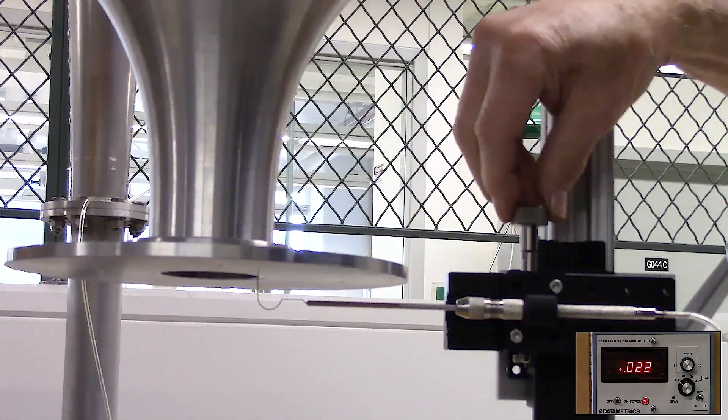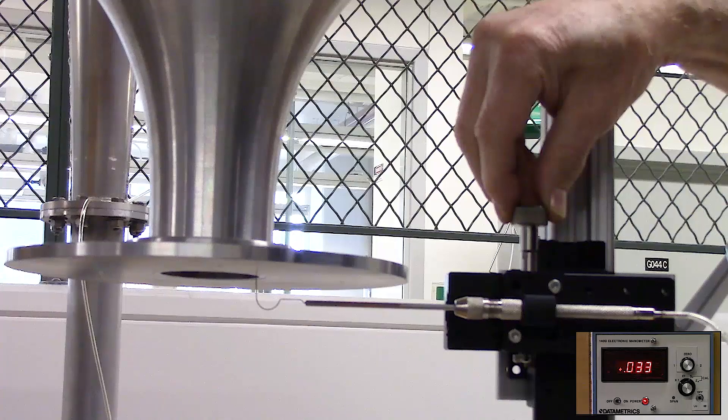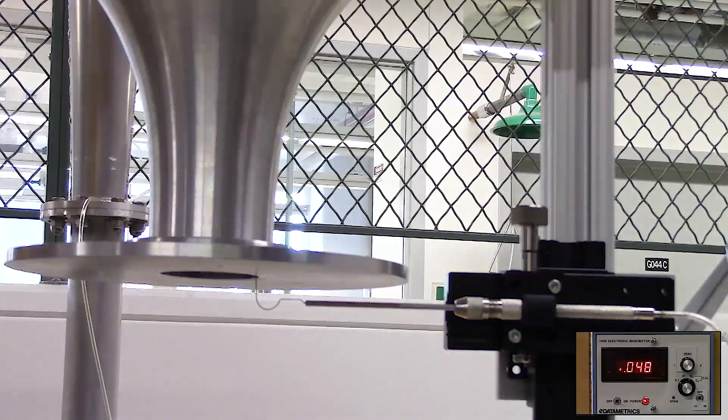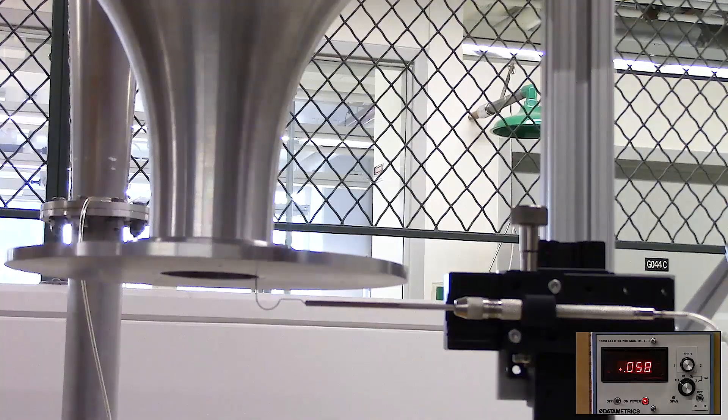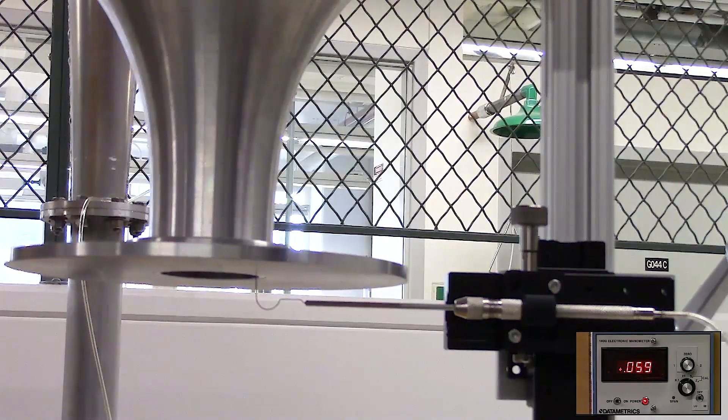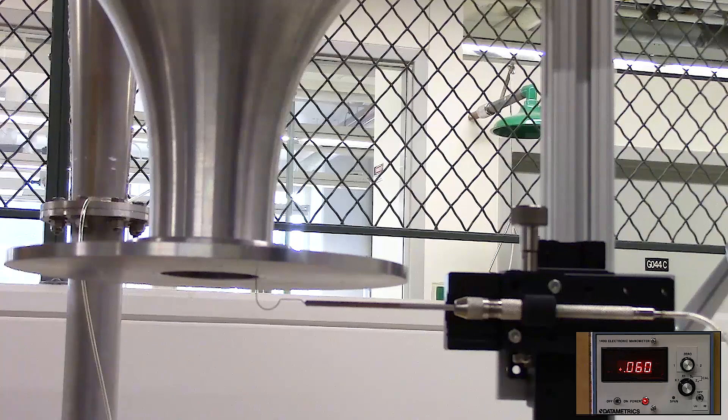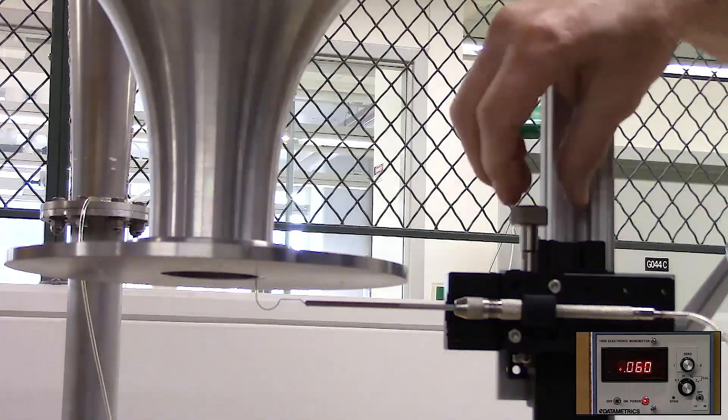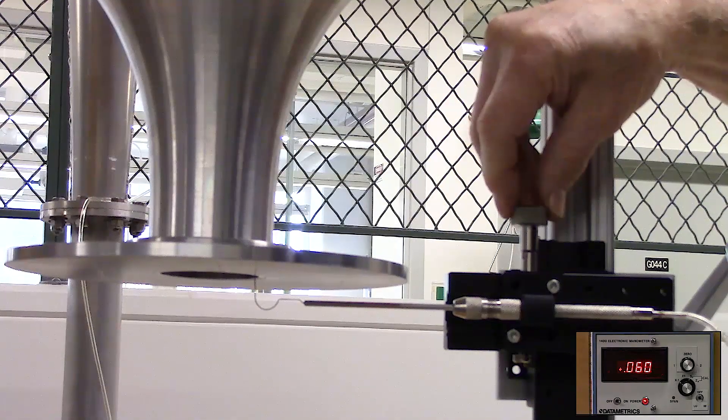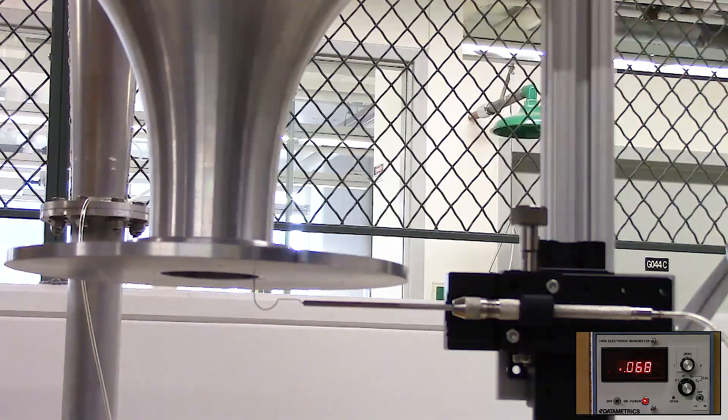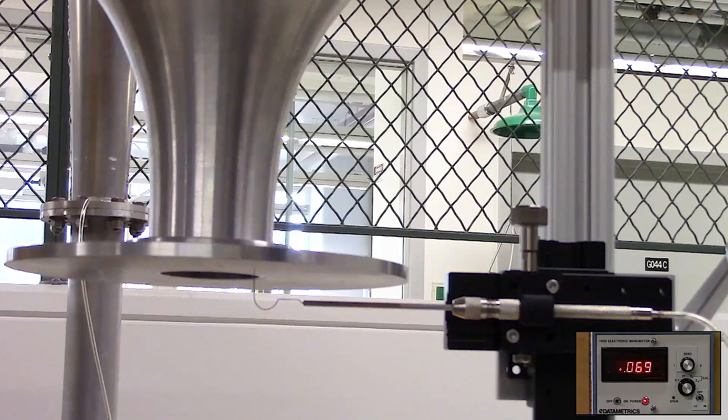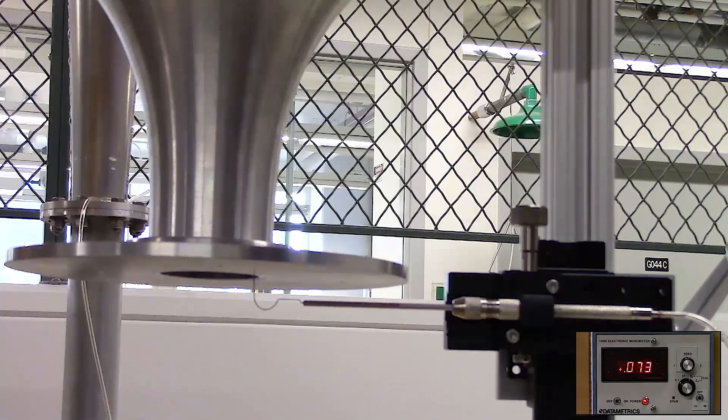Progress to two millimeters in. Our manometer reading is increasing. 0.60. Record that in my table. Three millimeters in. 0.73.